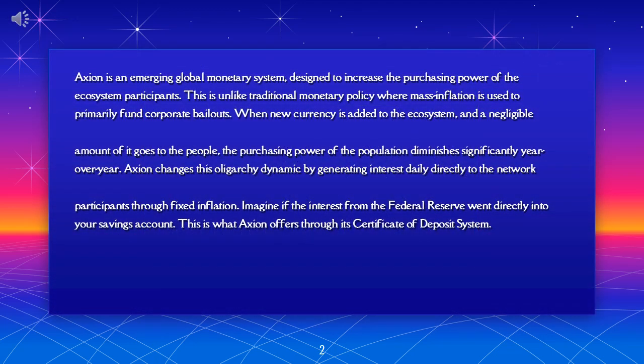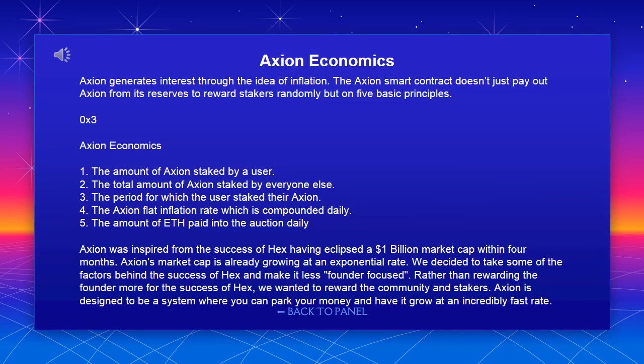What is Axion? Axion is an emerging global monetary system designed to increase the purchasing power of their ecosystem participants. This is unlike traditional monetary policy where mass inflation is used to primarily fund corporate bailouts. When new currency is added to the ecosystem, a negligible amount goes to the people, and the purchasing power of the population diminishes significantly year over year. Axion changes this oligarchy dynamic by generating interest daily directly to network participants through fixed inflation. Imagine if the interest from the Federal Reserve went directly into your savings account — this is what Axion offers through its certificate of deposit system.